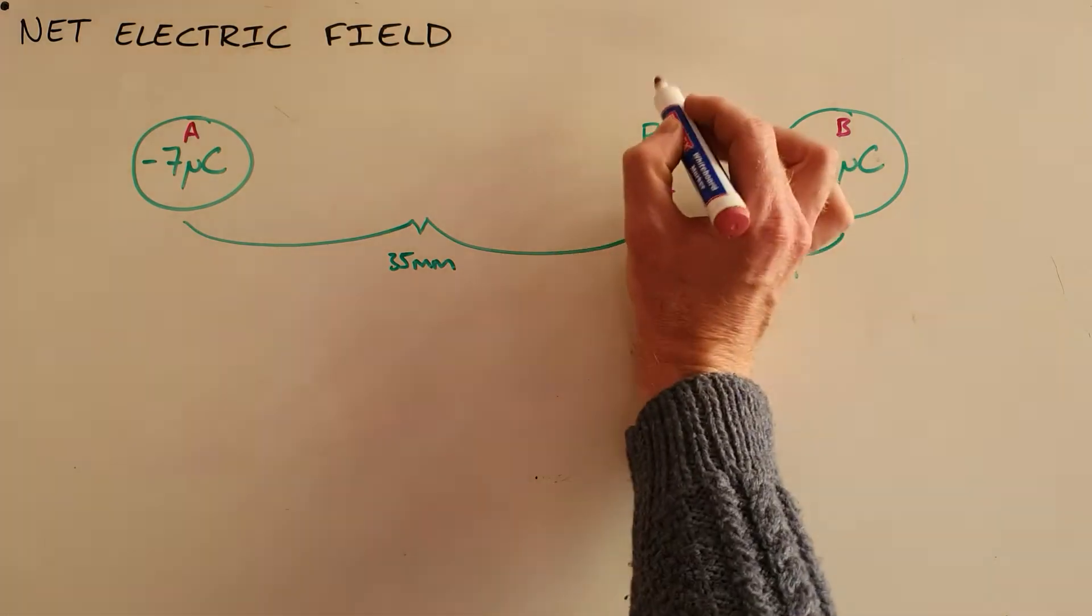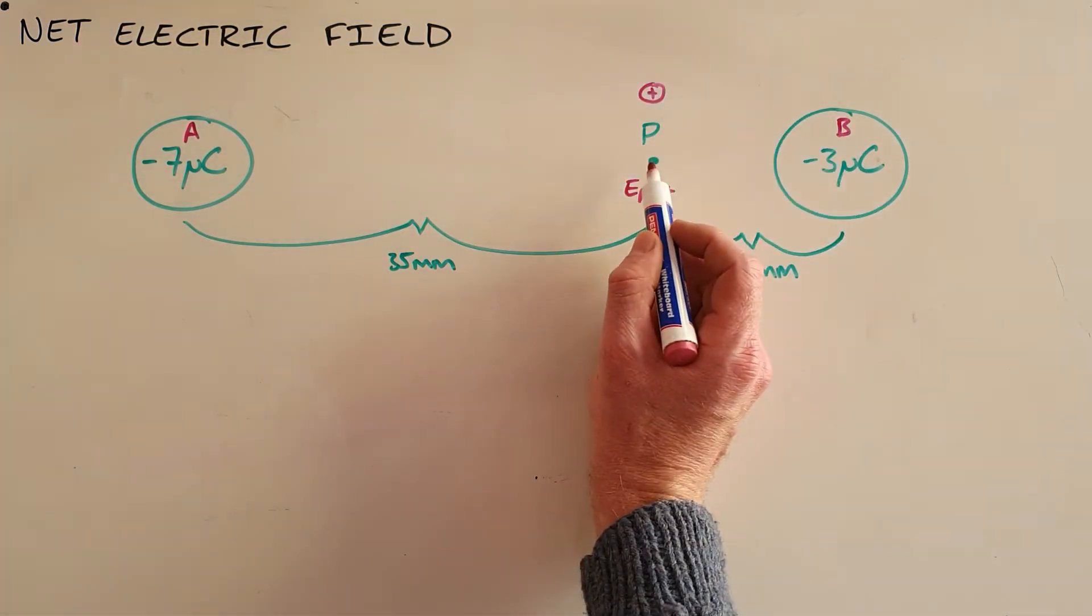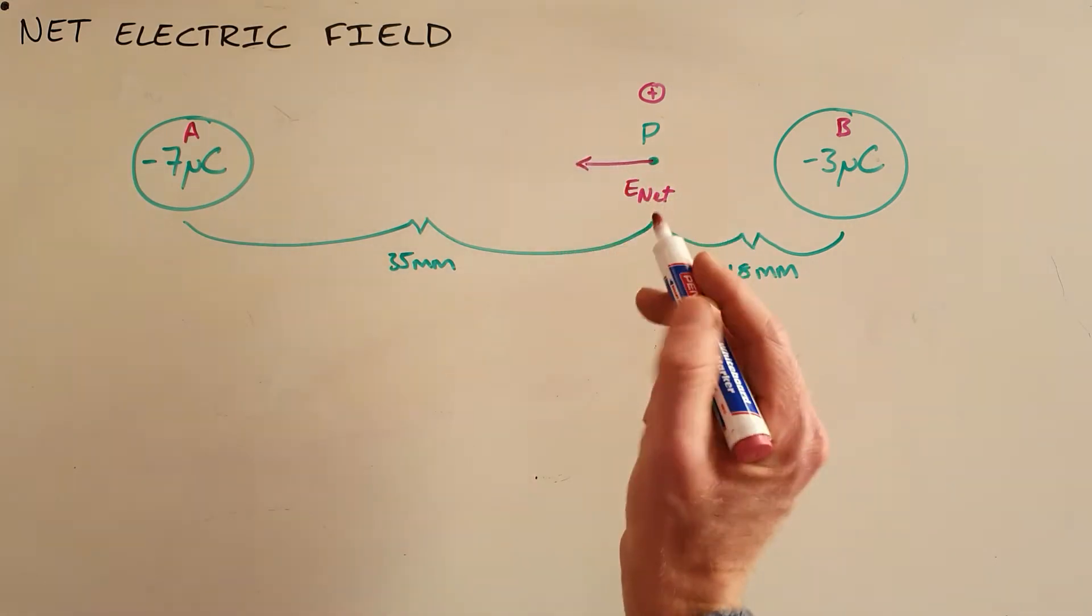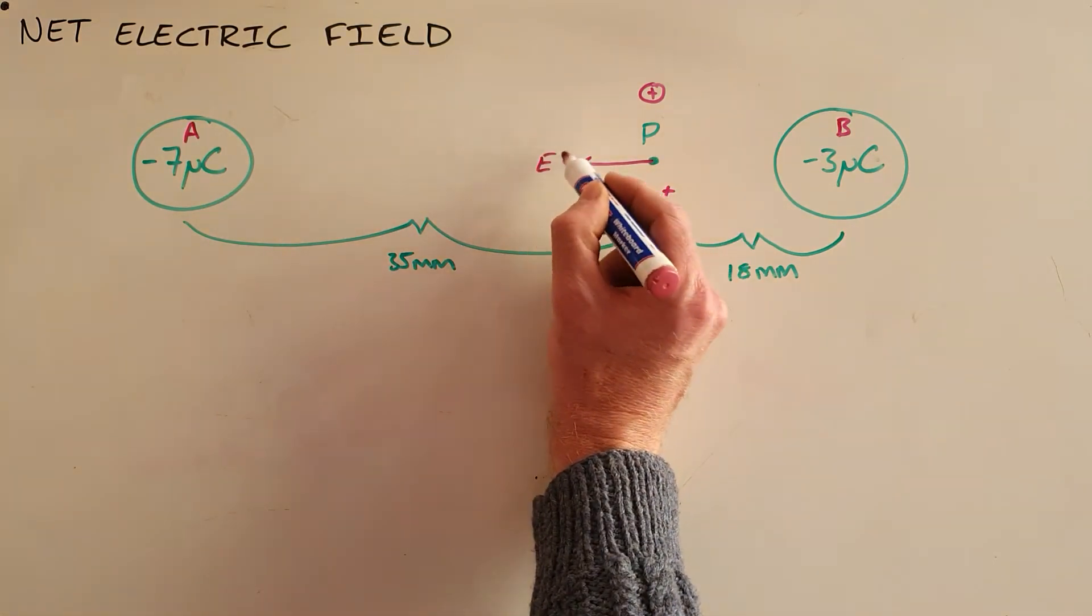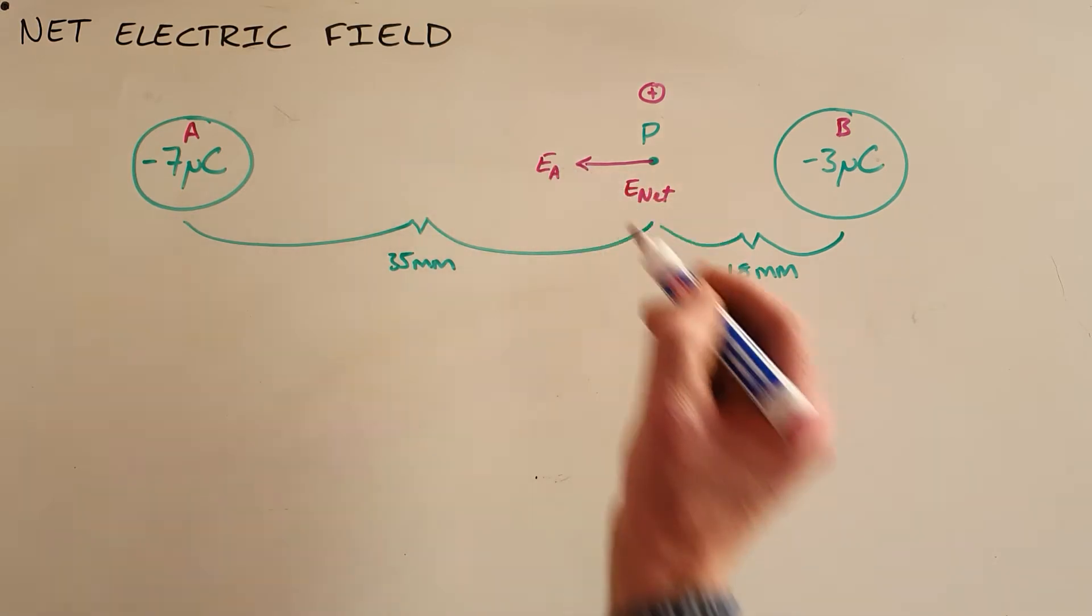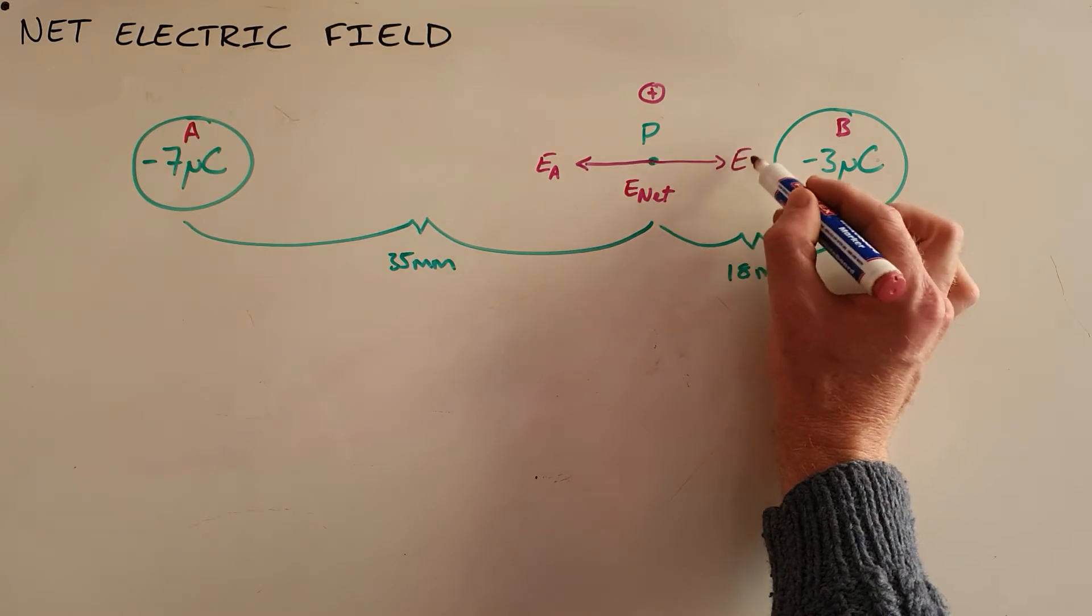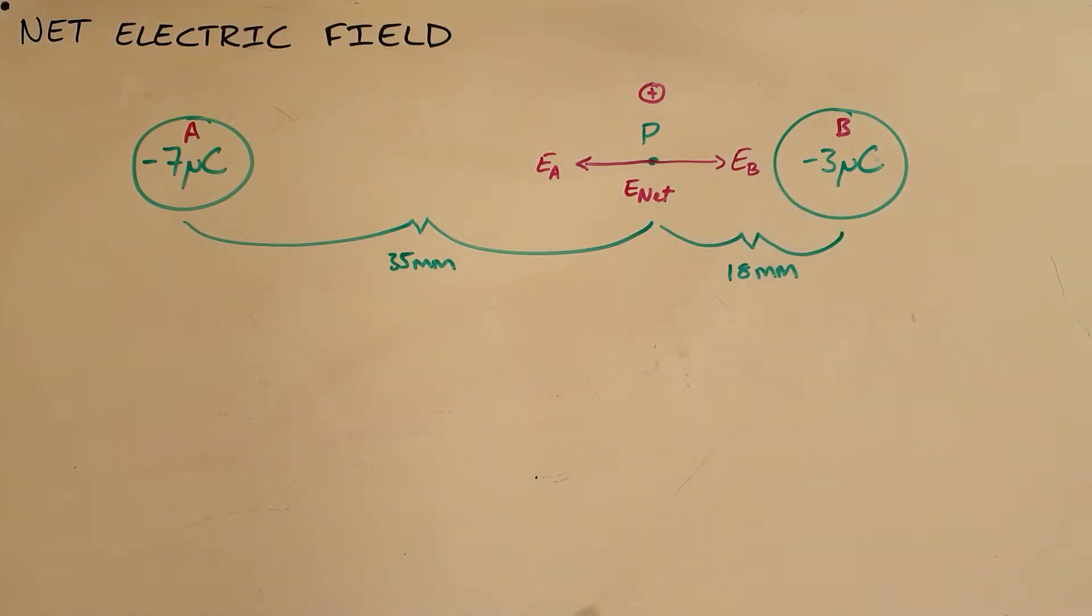And as we can see, if we were to place a positive charge at this point we would see that the electric field as a result of charge A would be towards the left, and very clearly we can see here that the electric field as a result of charge B would be towards the right.